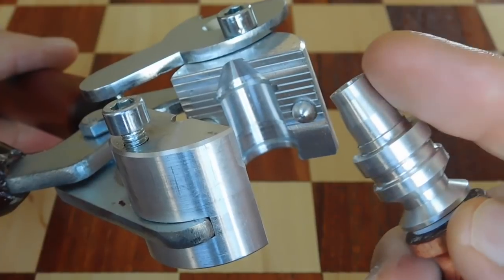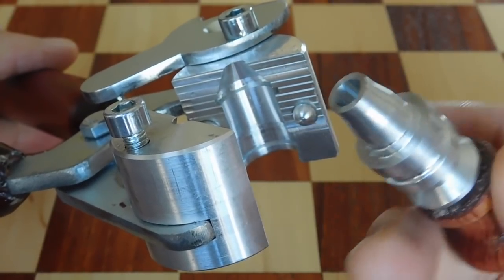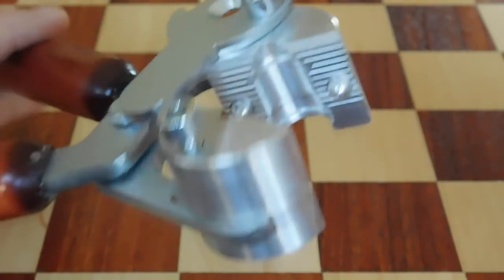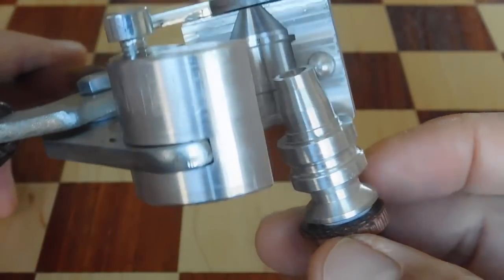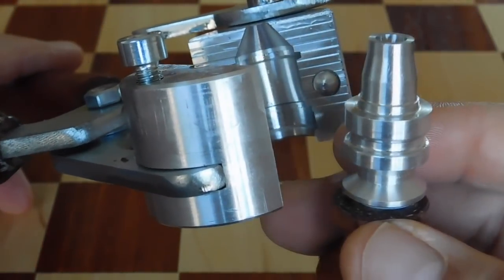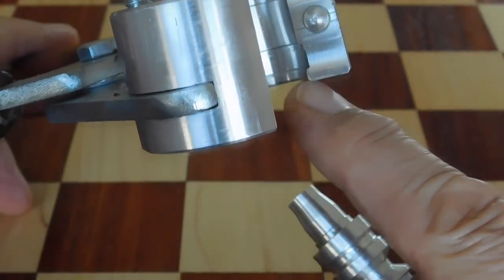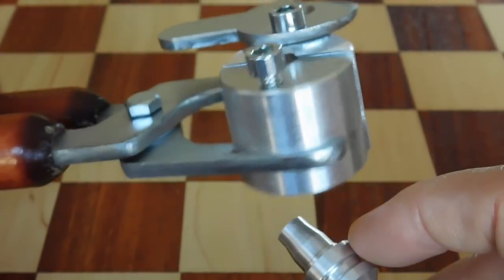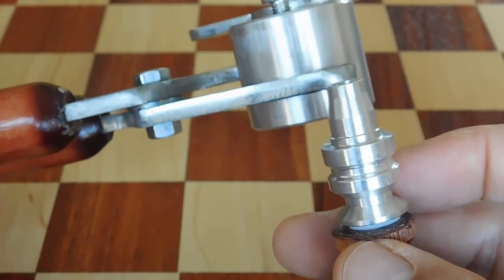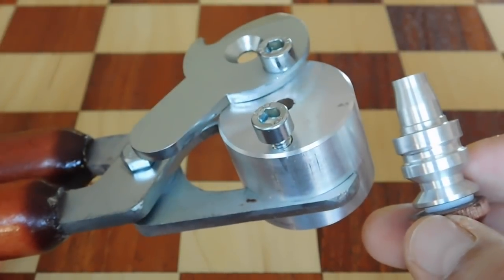Apparently, you can do something where when you take the slug out you can reposition the slug onto this area here and close the mold again and be able to pull the slug loose. We'll see how that works.